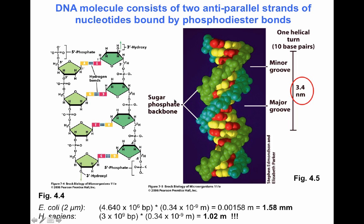The bases do not face each other at a 180 degree angle — they actually face each other at a broader angle, giving DNA a particular structure containing a minor groove and a major groove. It takes 10 bases for an entire turn of the helix, and the length of one turn is 3.4 nanometers.